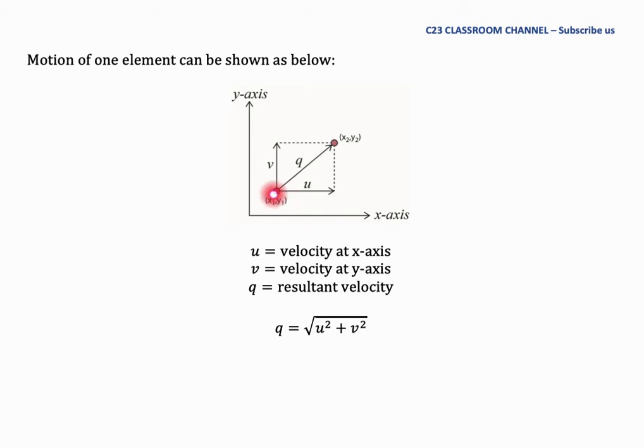We could say that it moves with a certain velocity and we could write the velocity from point (X1, Y1) to point (X2, Y2). Here is the velocity of q, and this velocity is the resultant velocity because if we discuss about the component velocity, we could say this molecule has the component velocity of u.